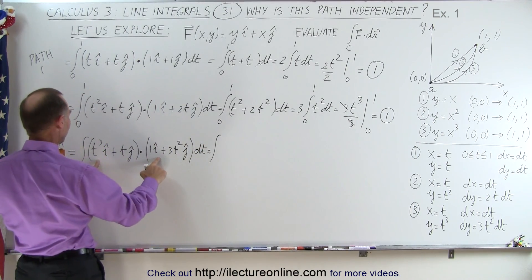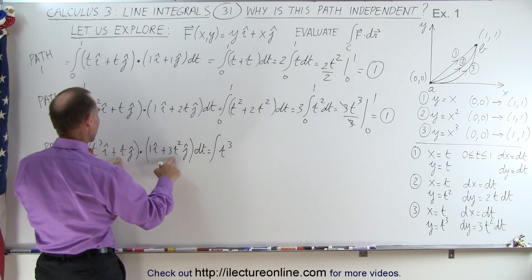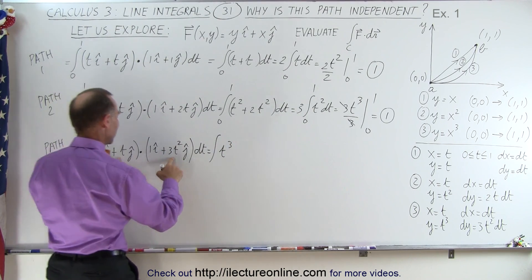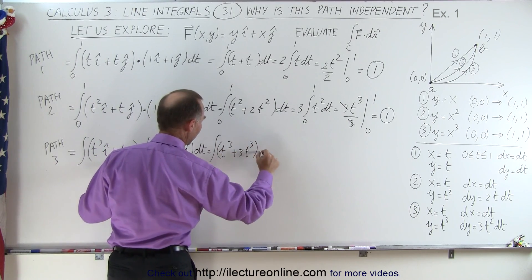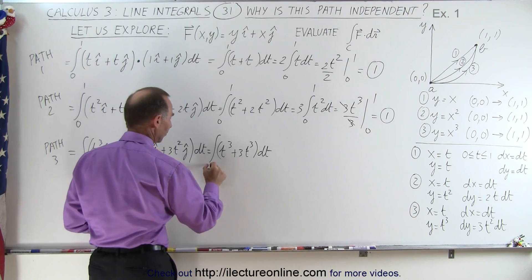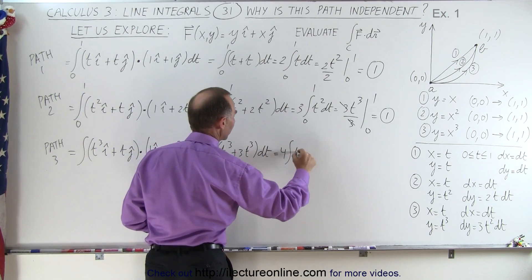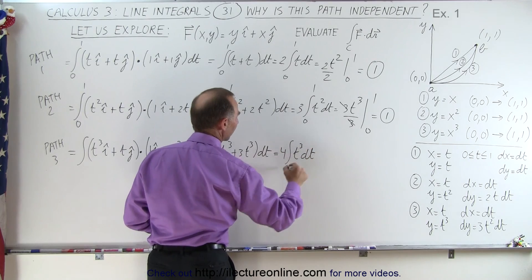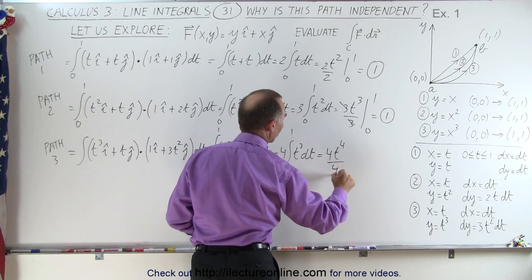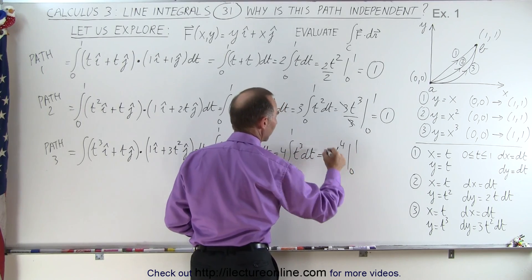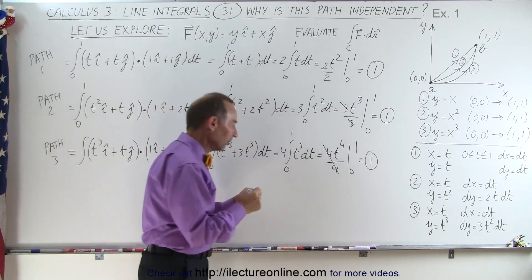When we multiply the i components together we get t cubed, we multiply the j components together, we get 3t cubed times dt from 0 to 1. So this is equal to 4 times the integral of t cubed dt from 0 to 1, which is equal to 4t to the 4th over 4, evaluated from 0 to 1, the 4ths cancel out, and we end up with 1 once again.